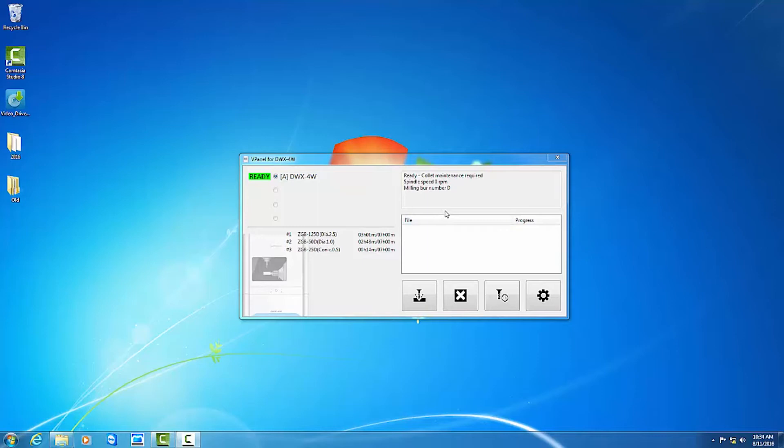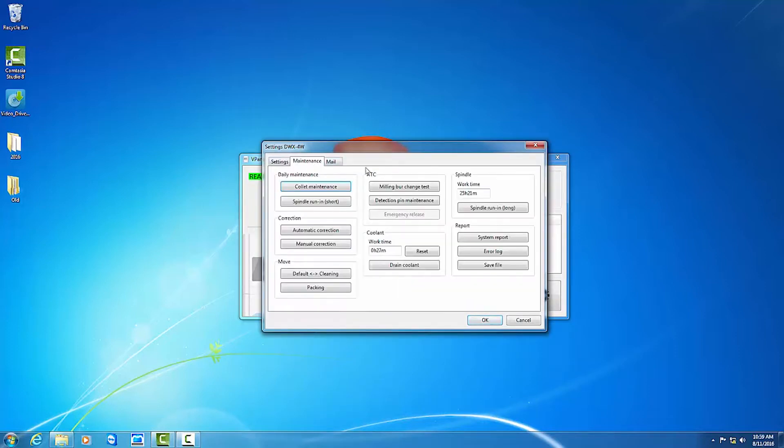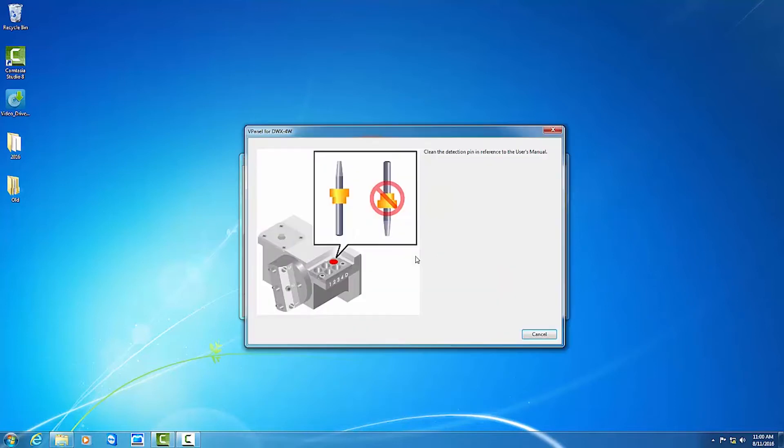Open the vPanel software installed on your computer. Click on the gear icon to get to settings and again on the maintenance tab. Choose detection pin maintenance.